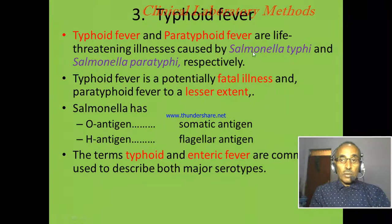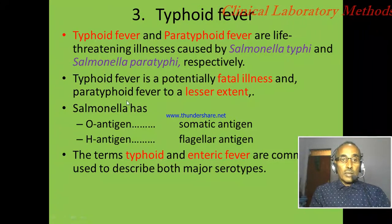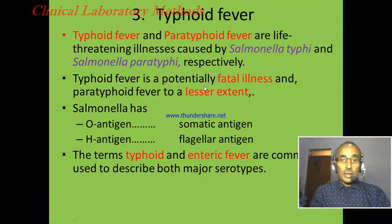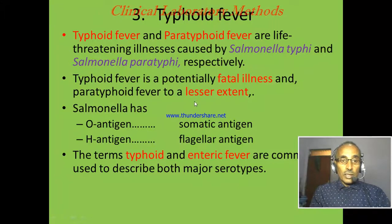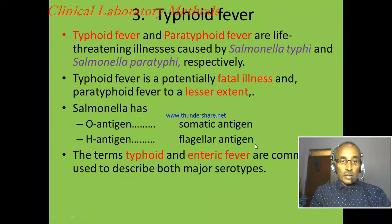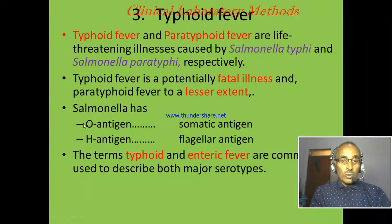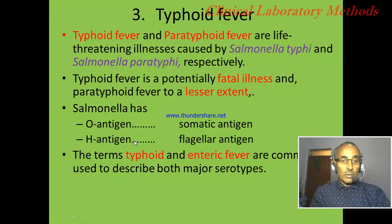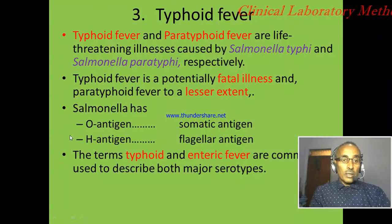Typhoid fever and paratyphoid fever are diseases caused by Salmonella typhi and Salmonella paratyphi respectively. Typhoid fever is more severe and fatal, whereas paratyphoid fever is a mild infection. The bacteria Salmonella has two important antigens: the O antigen from the somatic or cell body of the bacteria, and the H antigen from the flagella.